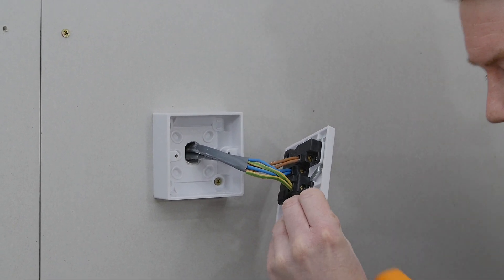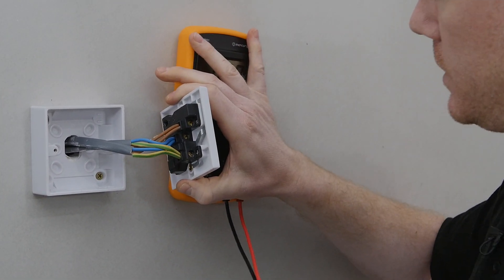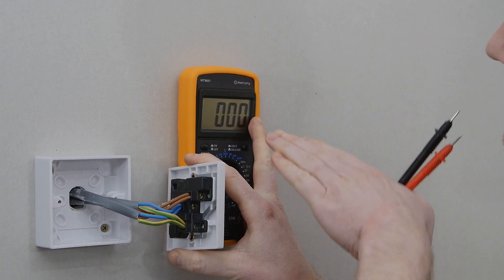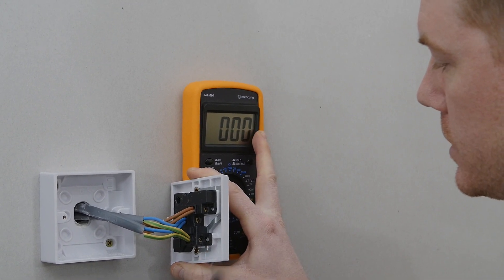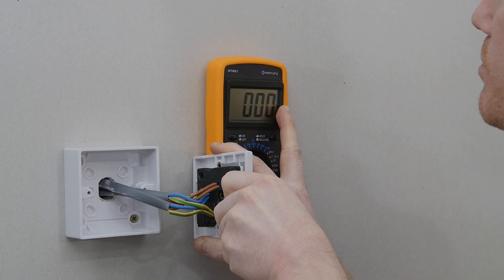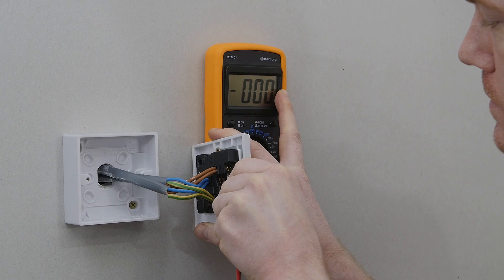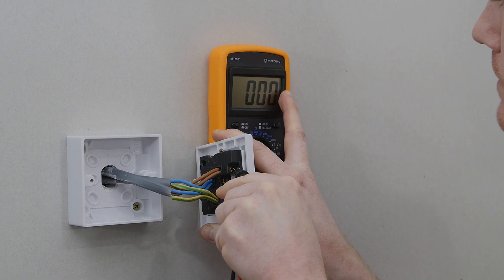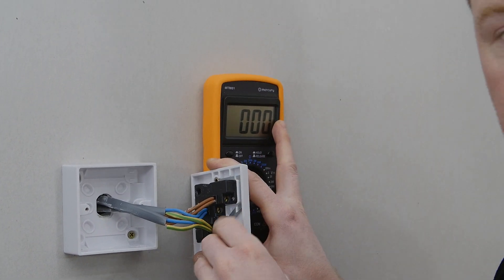What I'm going to do just to ensure that there's no power coming to the socket, I'm going to use a multimeter to test across the connections. So what I've done is set this to the highest AC voltage available. I'm just going to check across the terminals, across all of them using the two probes, and the reading on the meter should not change. So that's one, two, and three. No meter reading change, so I'm free to disconnect the wires from the terminals.